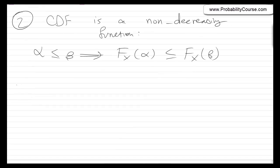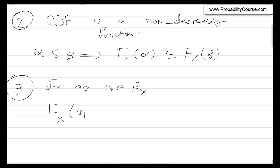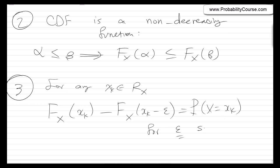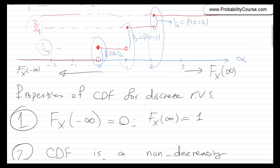The third property is the jump property. For any value xk in the range of the random variable x, the CDF at point xk minus the CDF at point xk minus epsilon — where epsilon is a very small value — equals the jump at point xk, which is equal to the probability that x equals xk. This is what we saw in the plot: we jump at zero, one, and two.